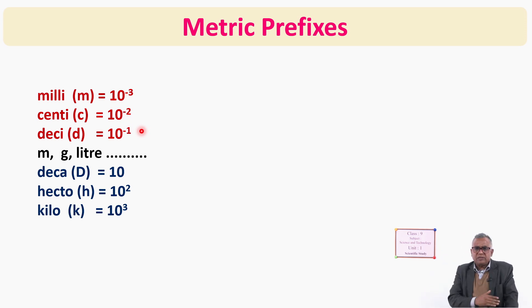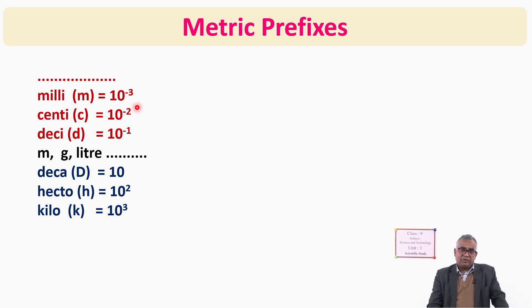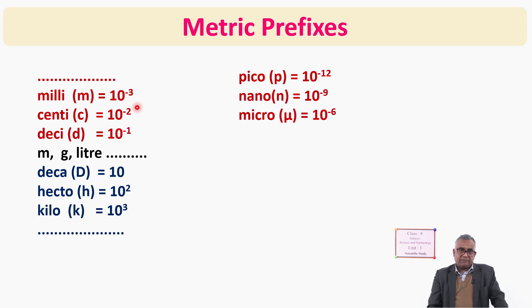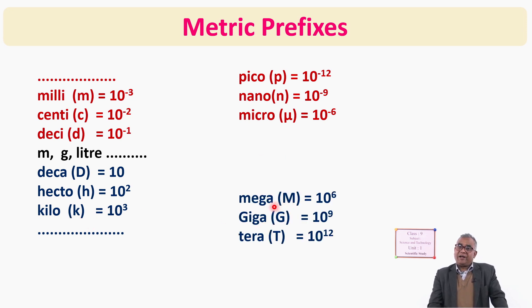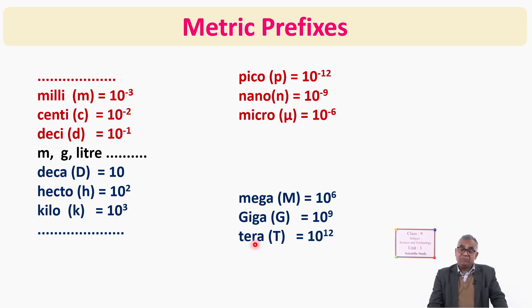There are some more smaller and bigger units. Micro is smaller than milli, nano is smaller than micro, pico is smaller than nano, femto is smaller than pico. For multiples bigger than kilo: mega, then giga, then tera. We use tera nowadays — terabyte (TB) in computers — and giga as gigabyte (GB). After tera there is peta and hexa, but we don't need those in our science.